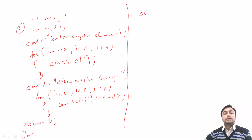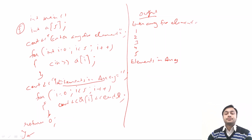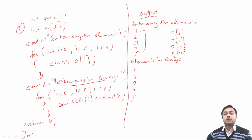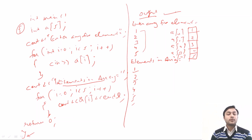When you run this program, you will see the output on the screen. It will prompt 'Enter any 5 elements.' The user enters 1, 2, 3, 4, 5. After that, it displays 'Elements in array:' followed by 1, 2, 3, 4, 5. After entering the values, in memory they are stored as contiguous memory allocation: 1, 2, 3, 4, 5. So this is a program of single-dimensional array implemented in Code Blocks software.